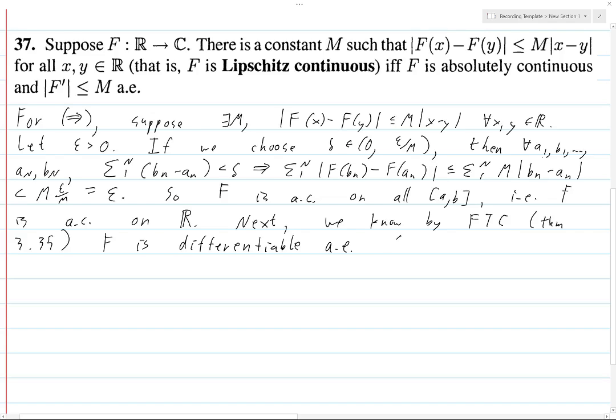So for Lebesgue almost every x in the real line, F'(x) is equal to, well, let's write this out, the limit as h goes to 0 of ||F(x+h) - F(x)|| divided by h, and this is less than or equal to the limit as h goes to 0...